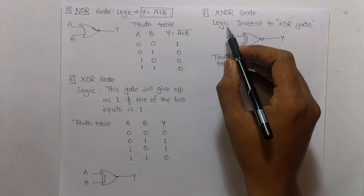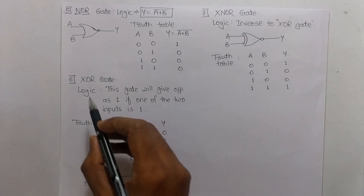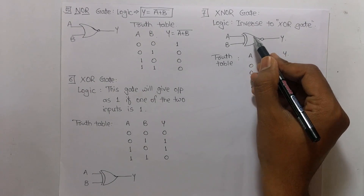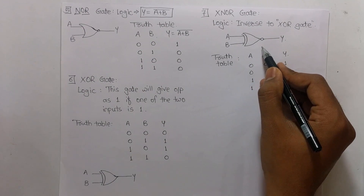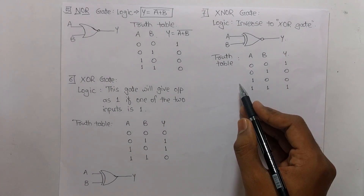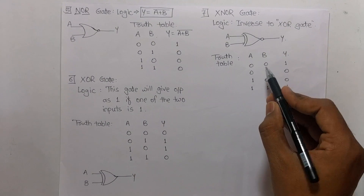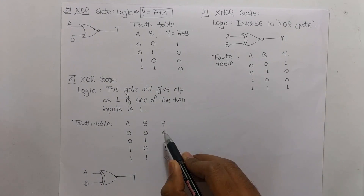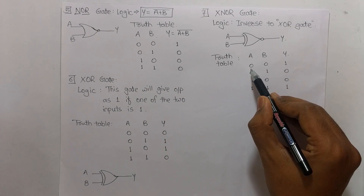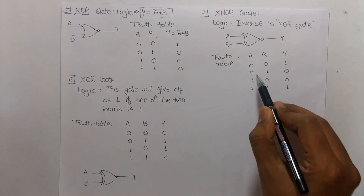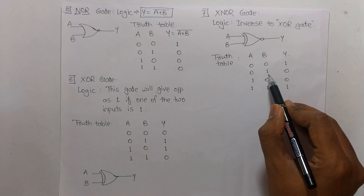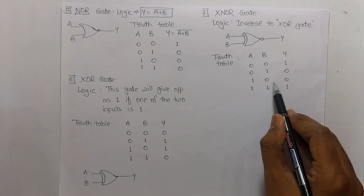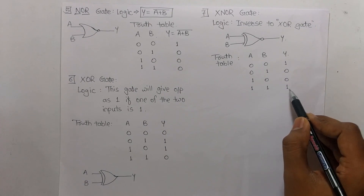The seventh gate is the XNOR gate. It is the opposite or inverse of the XOR gate. The symbol is like XOR but with a bubble. In the truth table, all outputs are opposite to XOR: 0 and 0 gives 1; if even one input is 1, the output is 0; and 1 plus 1 gives 1.